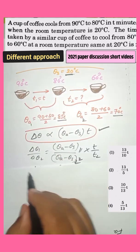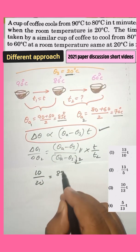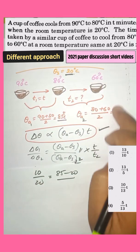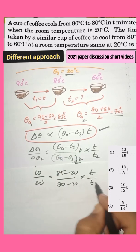So delta theta in the first case is 10 here. In the second case, it is 20 here. And theta average in the first case is 85, and minus surroundings is 20. And in the second case, the theta average is 70 minus 20 of the surroundings here, into T by T2 here.